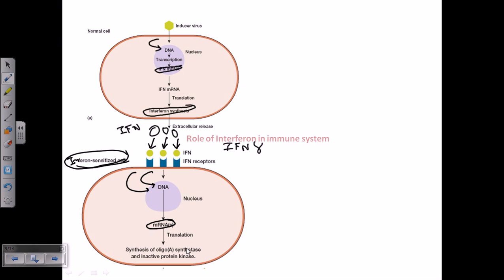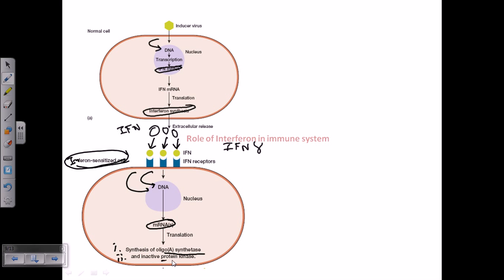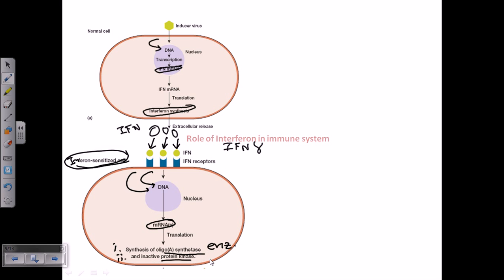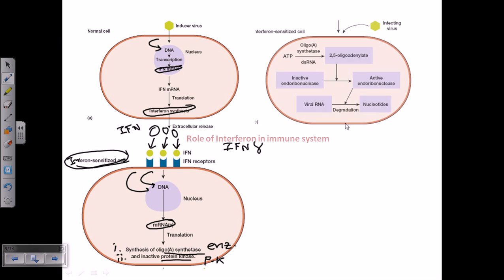After IFN attaches to the IFN receptors on interferon-sensitized cells, it provides downstream signaling to the nucleus. The DNA is instructed to produce mRNA that codes for two important factors: first, the synthesis of oligo-A-synthetase (an enzyme), and second, an inactive protein kinase — another enzyme capable of phosphorylating other proteins.